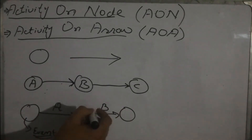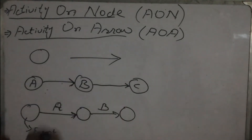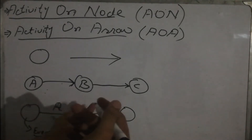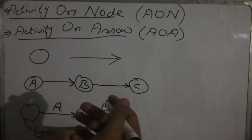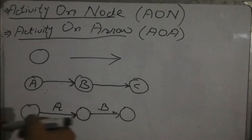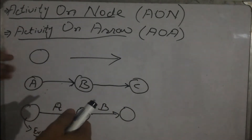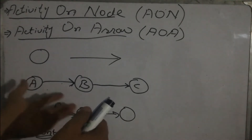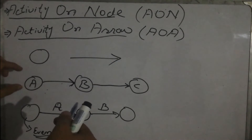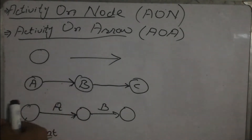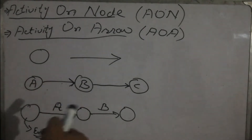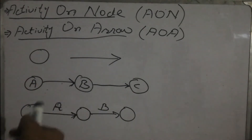In Activity on Arrow, nodes represent events where an activity has been completed or started. For example, the tail of an arrow represents the event where activity B has started and activity A has ended. In Activity on Arrow you show the activity by the arrow, while in Activity on Node you show the activity by the node, and the arrow represents the precedence — which activity is followed by what.